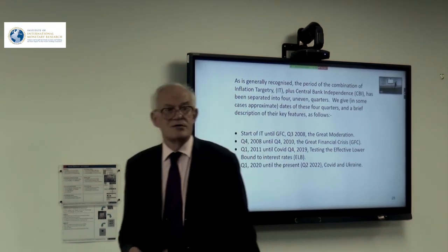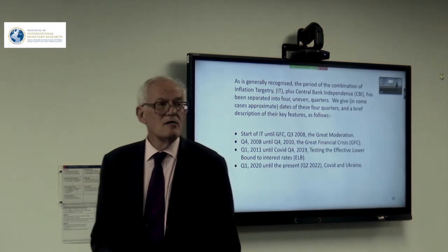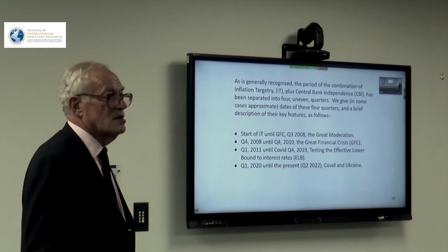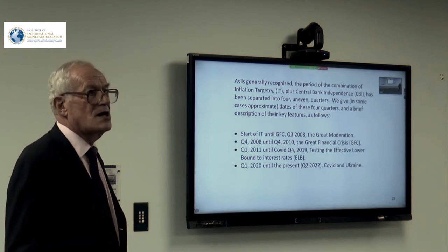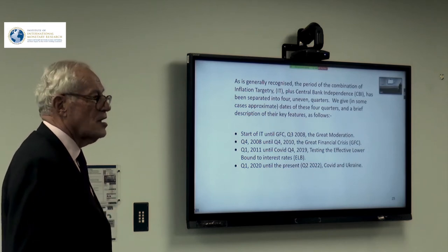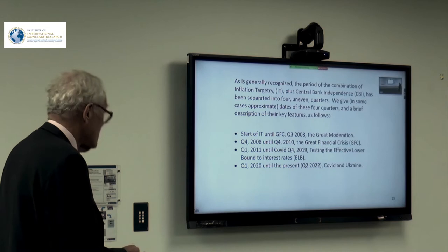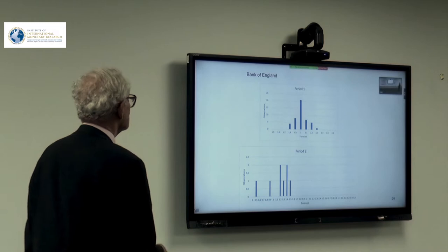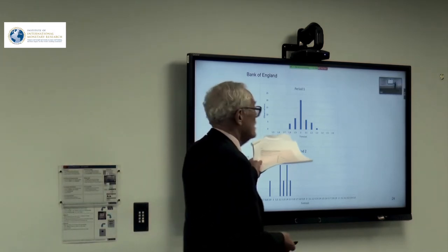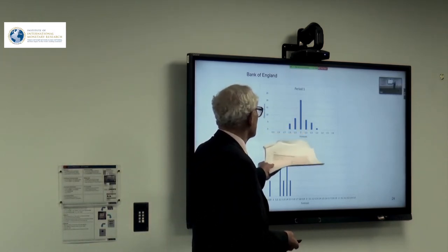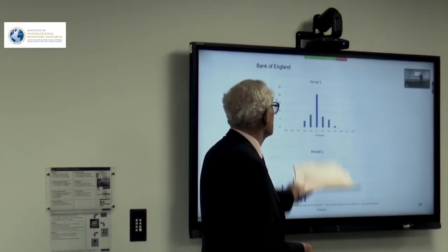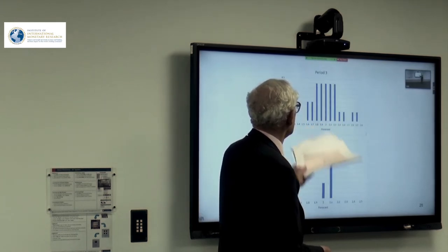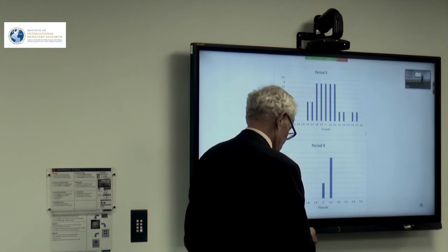So the first thing I wanted to look at was how far was it generally true throughout the whole period that in each period the forecast two years hence was always that we would get back pretty much exactly to 2%. And here are some bar charts. This is period one, the period from 1997 to 2008 Q3. And you can see that there's some variation, not very much. Sorry, I've gone too fast. Let me get back.